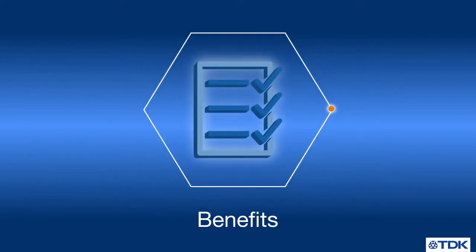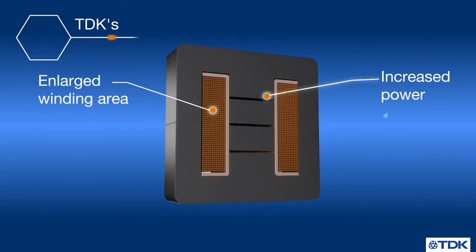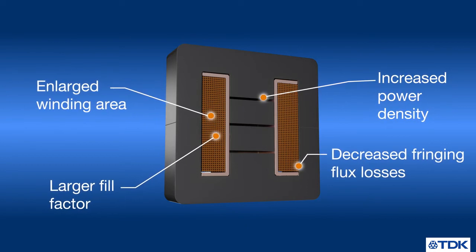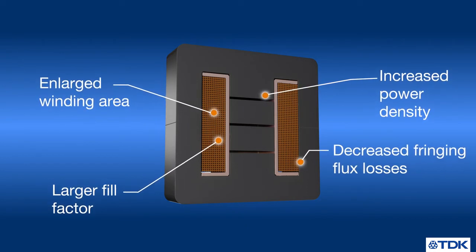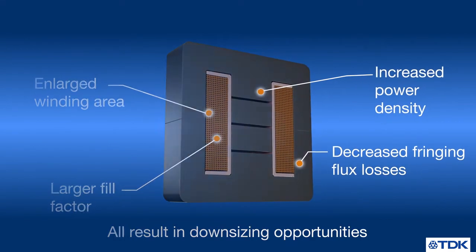What are the benefits for our customers? TDK's ferrite cores with distributed air gaps allow the use of a larger winding area by reducing the fringing flux losses, offer significantly increased power density, and improve the winding window fill ratio. All these benefits result in downsizing opportunities.